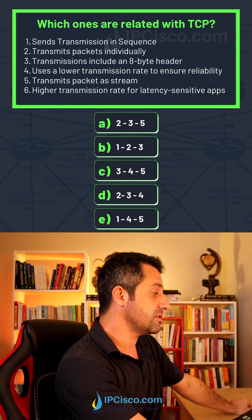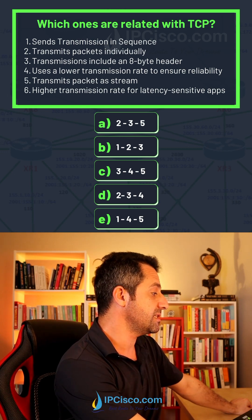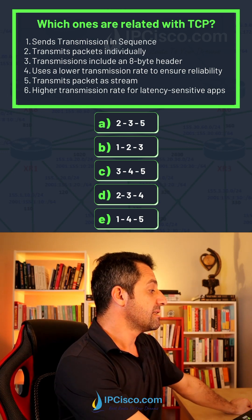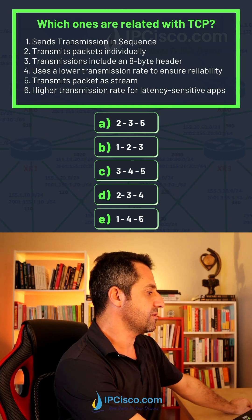Uses a lower transmission rate to ensure reliability. Yes, this is true for TCP. Transmit packet as stream. Yes, this is also true for TCP.